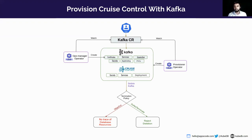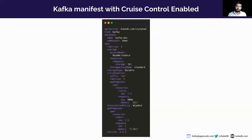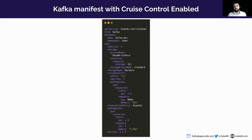Here is a sample YAML for a Kafka cluster with Cruise Control enabled. Starting from the top: the API version is kubedb.com/v1alpha2, the kind is Kafka, and in the metadata section you can provide the name and namespace — for this demo we're naming our cluster 'kafka-dev' in the 'demo' namespace. I've specified a replica count of three and we're deploying a combined-mode cluster. The storage section requests one gigabyte from the cluster, with a storage class name of 'standard' and a durable storage type — meaning even if your pod crashes, the PVCs will still be there.